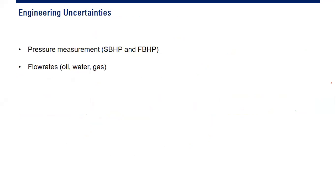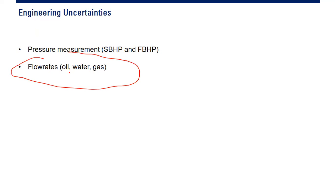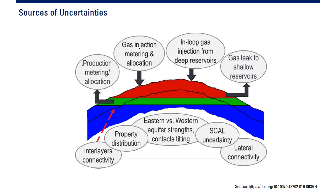We have petrophysical, geophysical, and geological uncertainty, but we also have engineering uncertainty. For example, from pressure measurement — static bottom hole pressure, flowing bottom hole pressure — there will be uncertainty and inaccuracy. Also the sampling and measurement of flow rate: oil flow rate, water flow rate, gas flow rate, water cut — there will be errors and uncertainty during measurement.